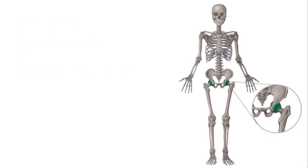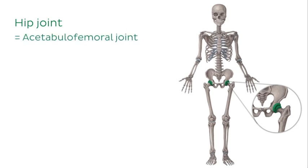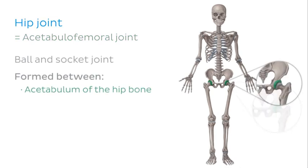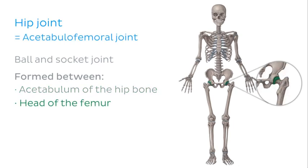Before we move on to the bones of the lower limb, let's look at the joint which connects the pelvis to the lower limb: the hip joint, also known as the acetabulo-femoral joint. The hip joint is a ball and socket joint formed between the acetabulum of the hip bone and the head of the femur, which is why we call it the acetabulo-femoral joint.